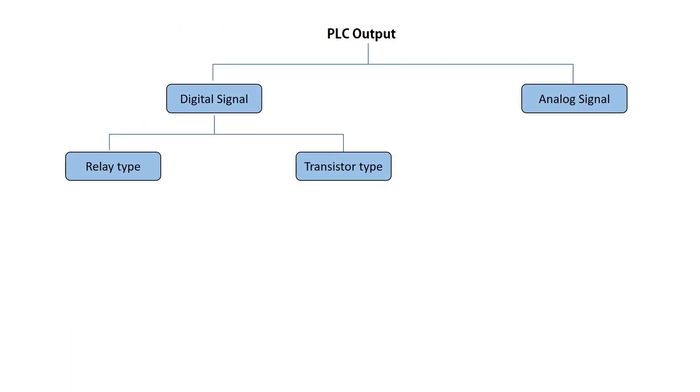Just like the PLC input module, the PLC output module emits signals as either digital or analog signals. These digital signals can be further categorized into two types, relay type outputs and transistor type outputs.